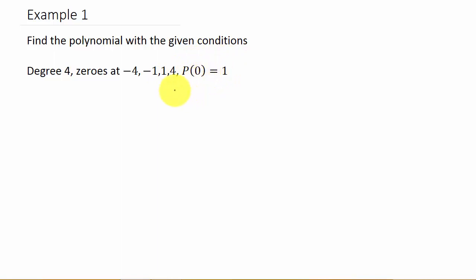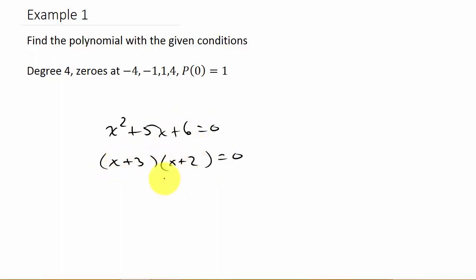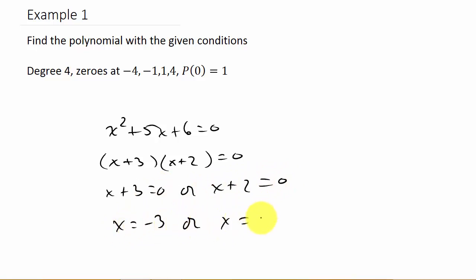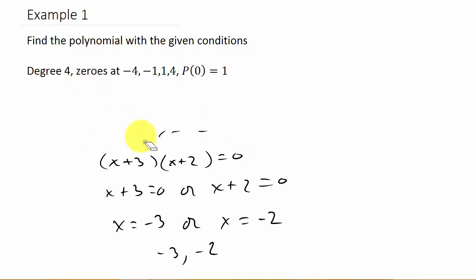It's kind of like if you have x squared plus 5x plus 6 equals 0, you factor it to get x plus 3 times x plus 2, so x equals negative 3 or x equals negative 2. Our solutions are negative 3 and negative 2. That's what we're starting with here — we're basically working backwards, but instead of a quadratic we have a fourth degree. It's the same concept.